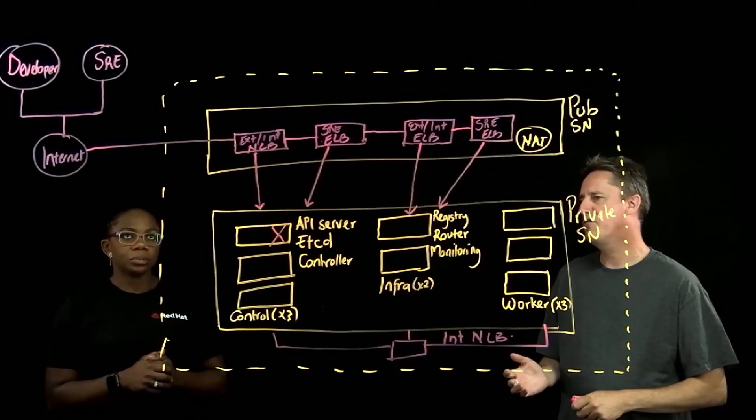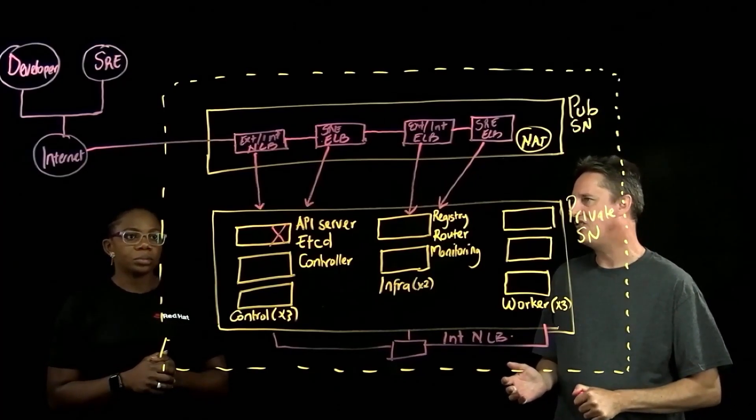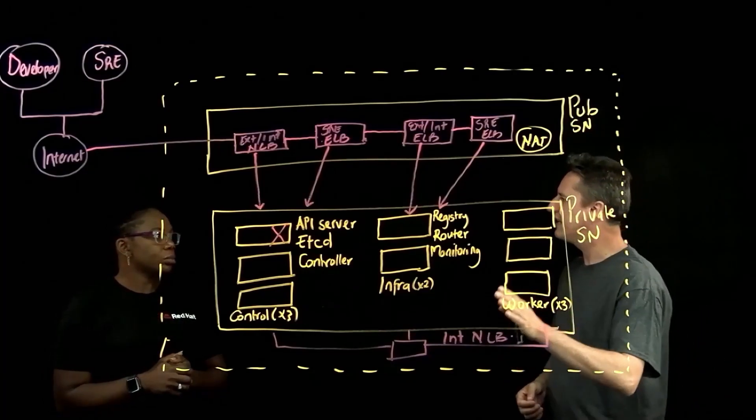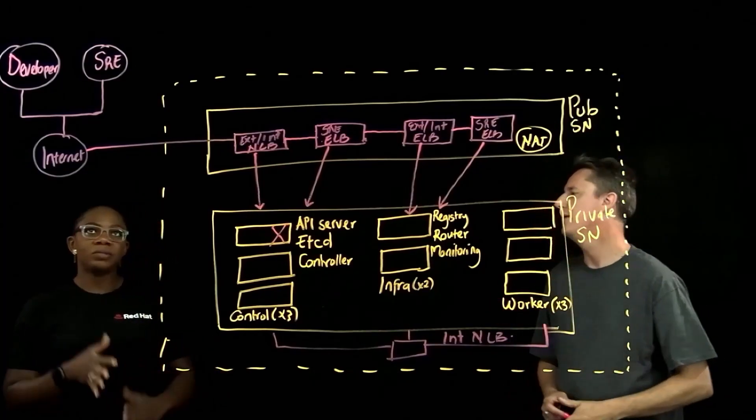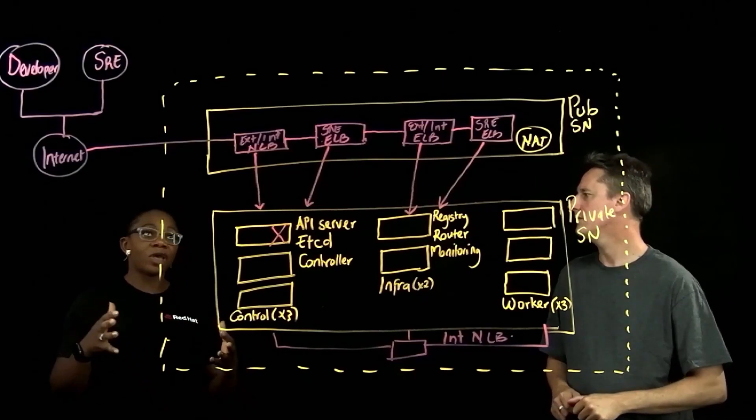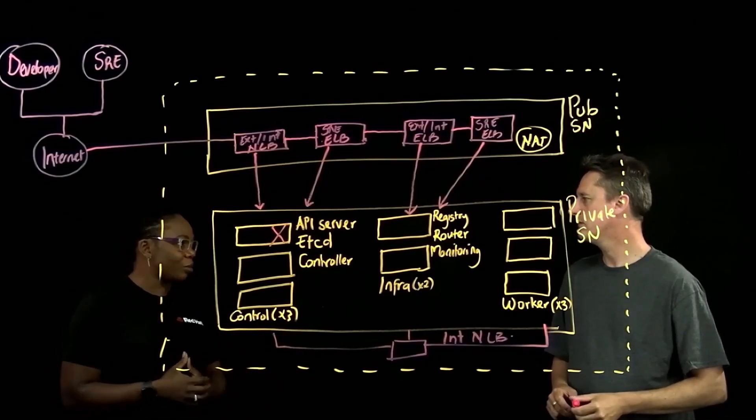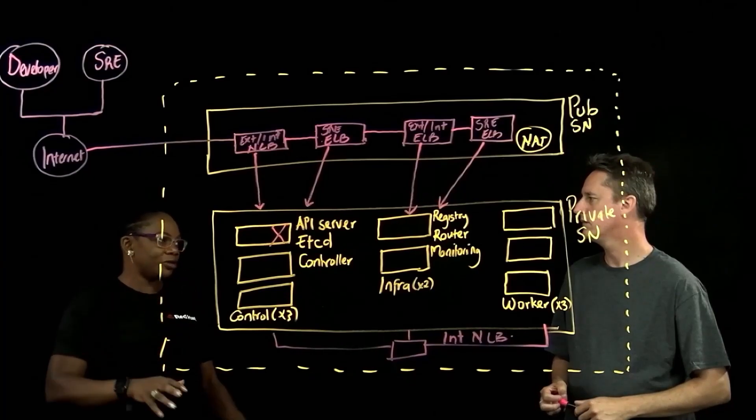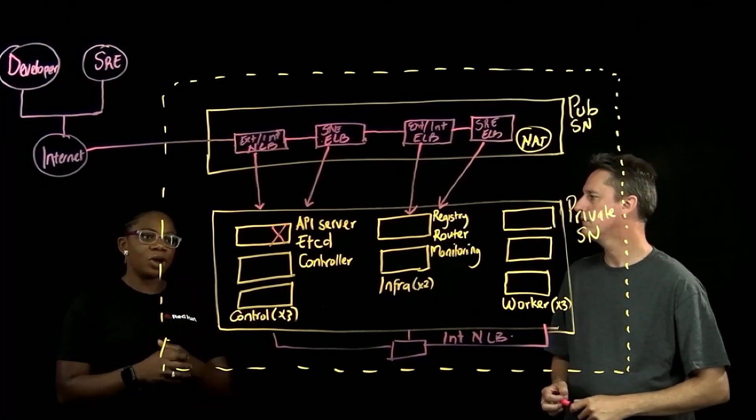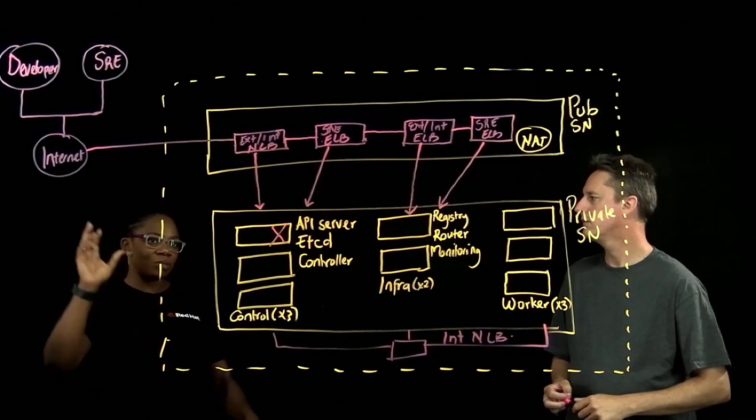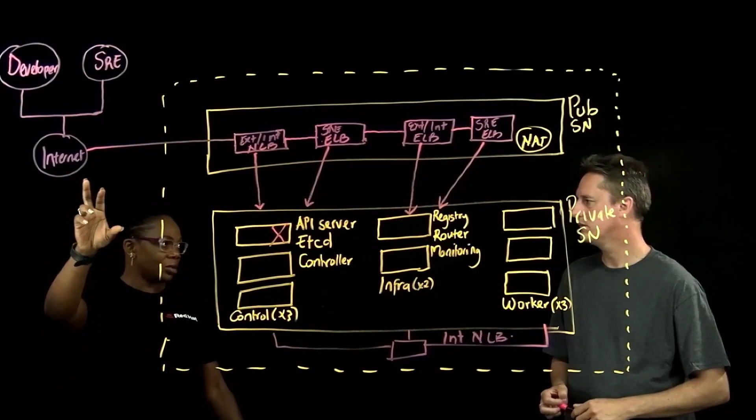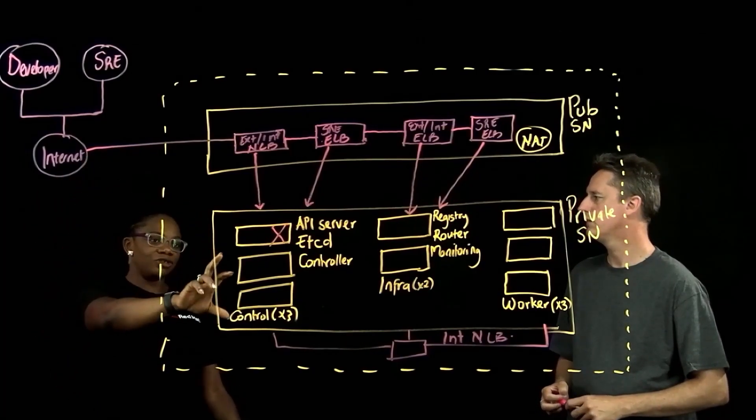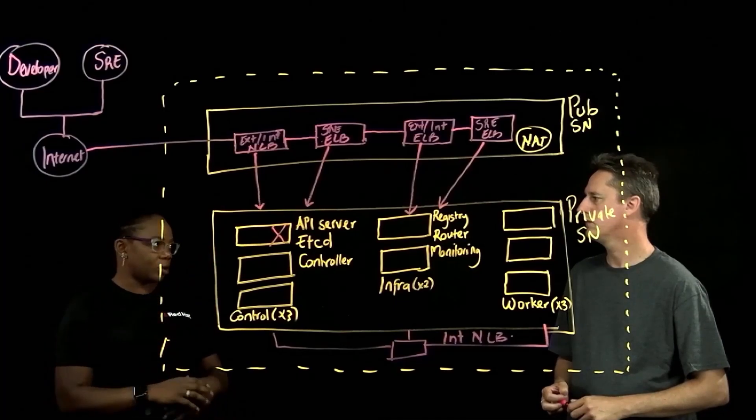With managed OpenShift, that's not necessarily the case. With ROSA, the customer doesn't need to worry about this. That's right, because behind the scenes, SRE are proactively monitoring your clusters, and once this fails, you won't even notice that there was a failure in one of your control planes, because the team, like the SRE team that manages the clusters, would spin up another one for you.